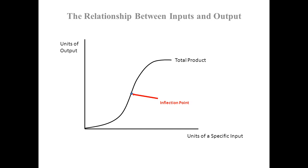Notice that up until the inflection point, we are experiencing increasing marginal returns from this specific input. Why would we experience increasing marginal returns? It is due, most likely, to specialization. As we add more units of this specific input, it can become more specialized. If you check back on the essay entitled The Introduction to Capitalism, particularly the subsection called The Logic of the Market, you will find three reasons why specialization increases productivity. So at low levels of output we are getting the benefits of specialization, leading to increasing marginal returns.